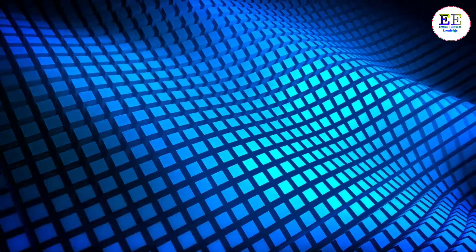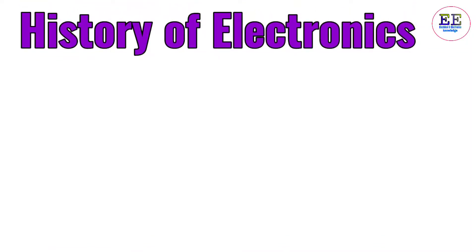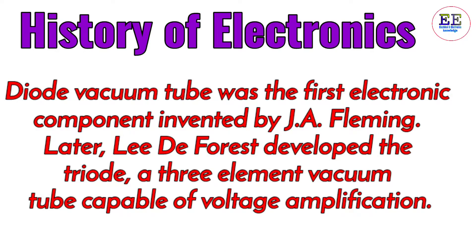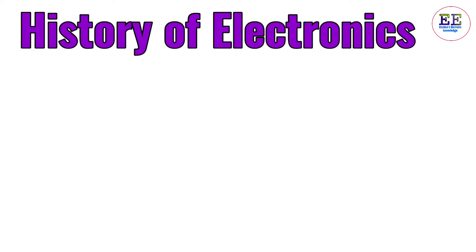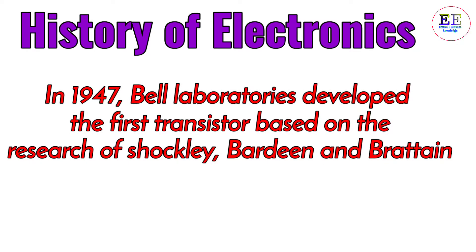Regarding the history of electronics: the diode vacuum tube was the first electronic component, invented by J.A. Fleming. Later, Lee de Forest developed the triode, a three-element vacuum tube capable of voltage amplification. In 1947, Bell Laboratories developed the first transistor based on the research of Shockley, Bardeen, and Brattain.